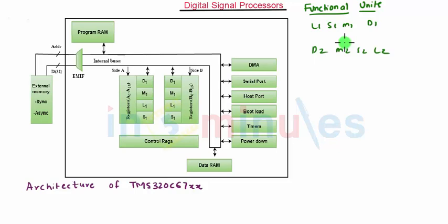The functional units L1, S1, M1, D1 write to register file A and similarly this set write to register file B. As each unit has its own 32 bit write port, all 8 ports can be used in parallel in every cycle.